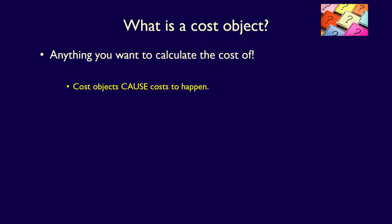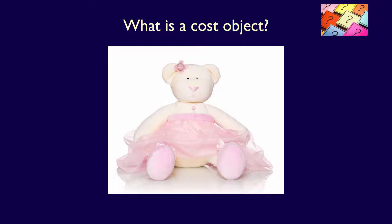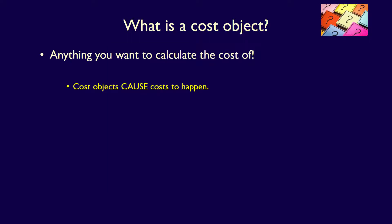Let's give an example to make this clearer. Assume we have a company which manufactures stuffed toys, and one of those stuffed toys is a dancing bear wearing a tutu. That dancing bear would be a cost object. Why? Because the production of the dancing bear causes the cost to happen. In order to manufacture the dancing bear, the company would incur costs for materials, labor, machinery, electricity, water, gas — the list goes on. Those costs only exist because the company is manufacturing the dancing bear. If they stopped manufacturing the dancing bear, the costs would stop also. The very act of manufacturing the dancing bear causes the cost to happen, and that's why the dancing bear is a cost object.